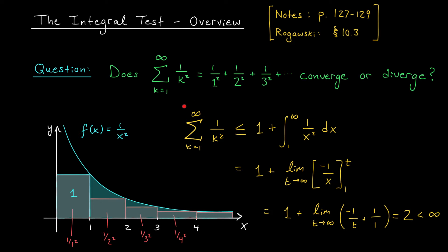It turns out this series is a very famous one, studied by Euler back in the 1700s. Euler was actually able to show that the sum of this series is exactly π²/6 — pretty cool. Note that π²/6 is around 1.64, which is indeed less than 2. Showing that the sum is exactly π²/6 is beyond the scope of our course, but there's a very cute proof using Fourier series, something you might encounter later in your degree.